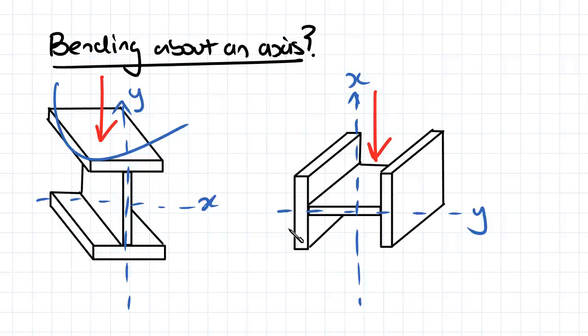And then with this I beam orientation, if we use our right hand with our thumb along the y-axis, rotation would be caused about the y-axis. And that's why this is called y-axis bending.